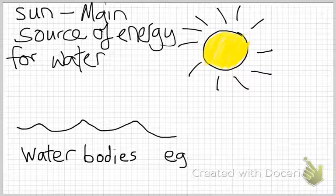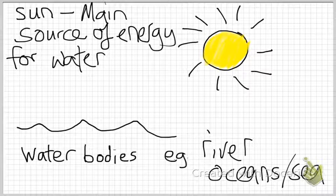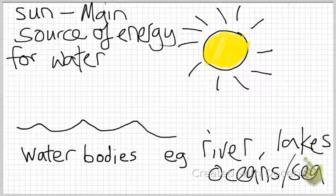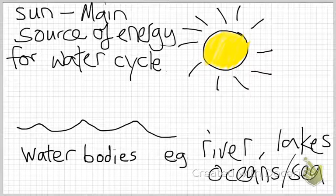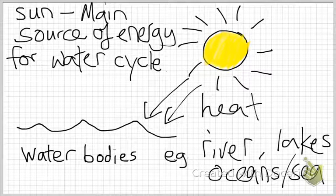The Sun provides heat for the water bodies. Can somebody give me examples of water bodies? Rivers, sea, ocean, lakes, reservoir, and so on. The Sun provides heat for the water bodies, so that once the water body gains heat, it will evaporate, and the water cycle continues.